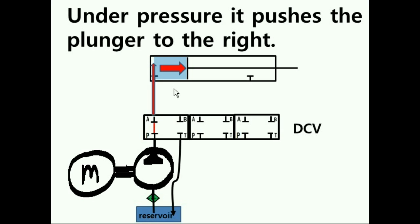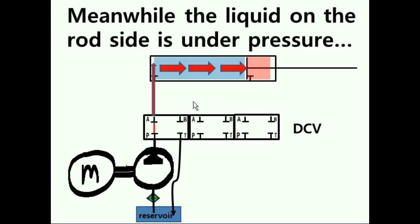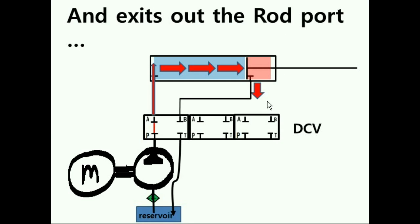And under pressure, it pushes the plunger, the rod, to the right. Further and further. Meanwhile, the liquid on the rod side is under pressure and exits out the rod port. This guy here.